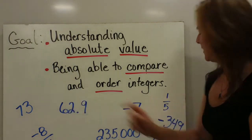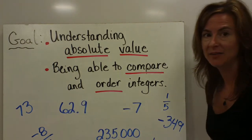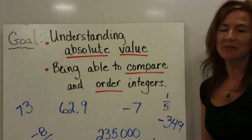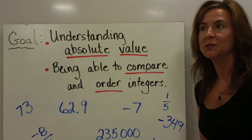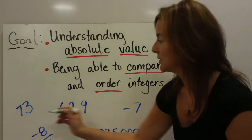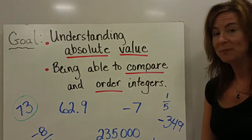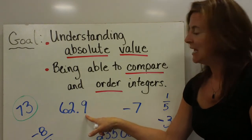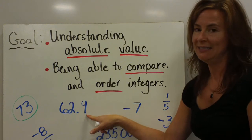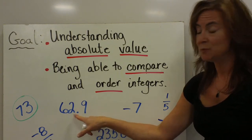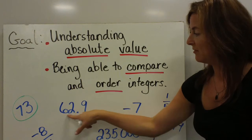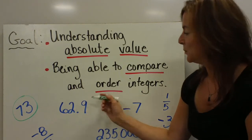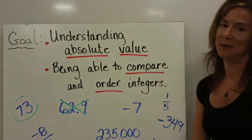We're going to determine if we indeed have an integer example here. We start with 73. An integer is a whole number and its opposites, so 73 would be considered an integer. Here we have 62 and 9 tenths. 62 and 9 tenths is a decimal, which means we have a whole number and a part of a number. This would not be an example of an integer.